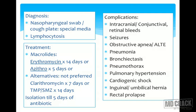Complications of pertussis include intracranial bleeds, subconjunctival hemorrhages, retinal bleeds, pneumonia, hypoxic seizures, obstructive apnea, and apparent life-threatening events. Long-term complications include pulmonary hypertension. During acute bouts, pneumothorax and cardiogenic shock can occur. Due to chronic coughing and increased intra-abdominal pressure, rectal prolapse or inguinal and umbilical hernias may develop.